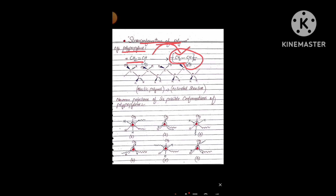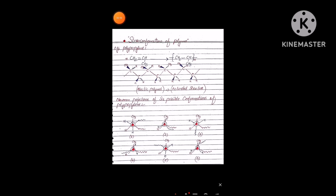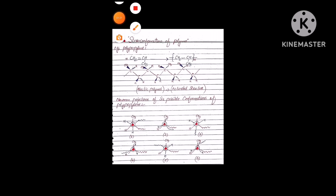This polypropylene polymer can be arranged and looks like this — a polymeric chain. If we focus on a single monomeric unit, here is our CH₂, CH, and CH₃. In the main chain, on these carbons, the substituent CH₃ is attached. This single unit in a polymeric chain is arranged as: CH₃–CH–CH₂, CH₃–CH–CH₂.